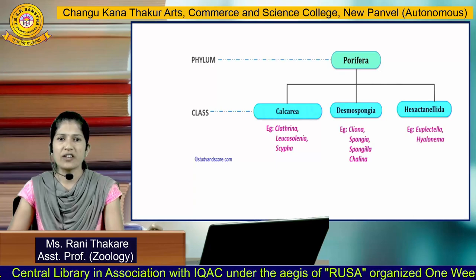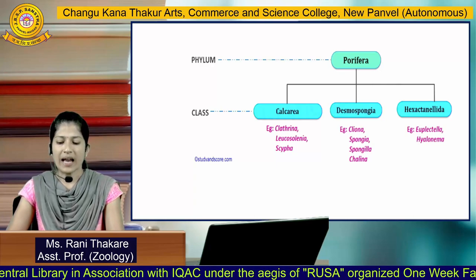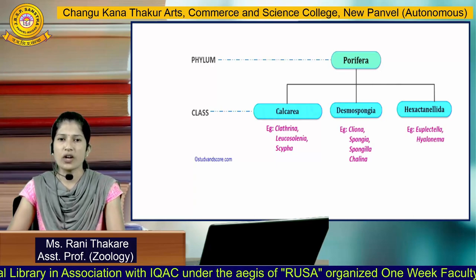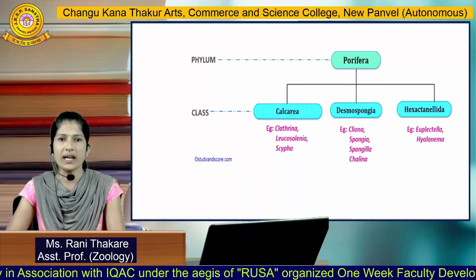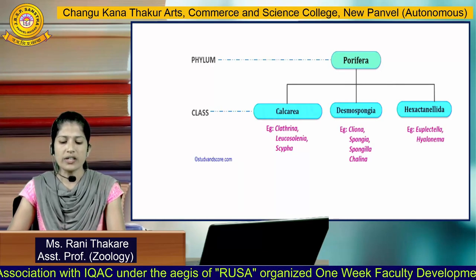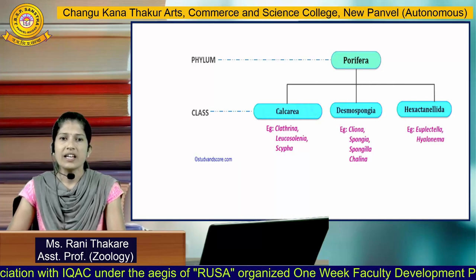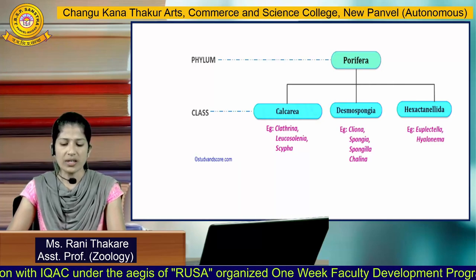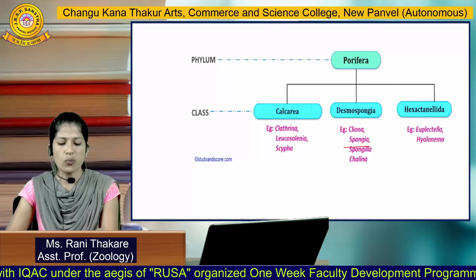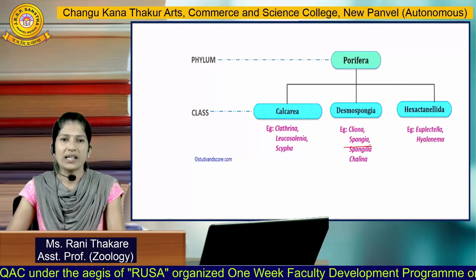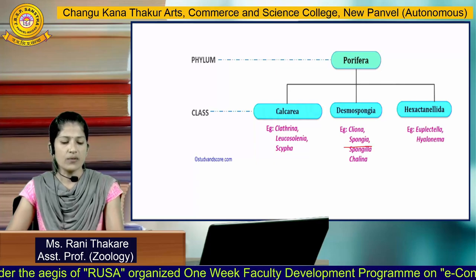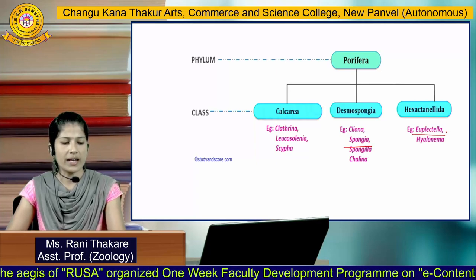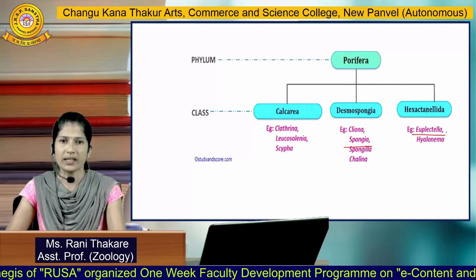Porifera has three classes: class 1, Calcarea, with the example Leucosolenia; class 2, Demospongiae, with the example Spongilla; and class 3, Hexactinellida, with the example Euplectella.